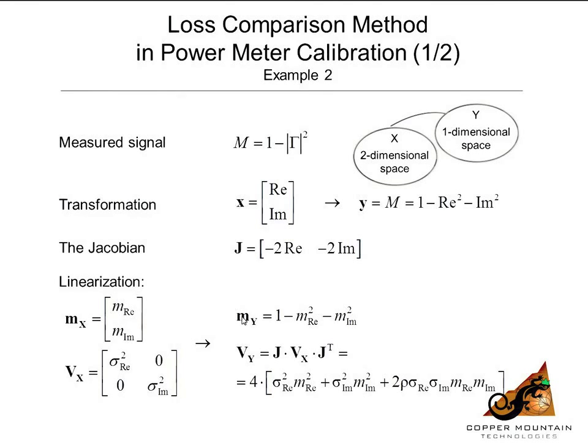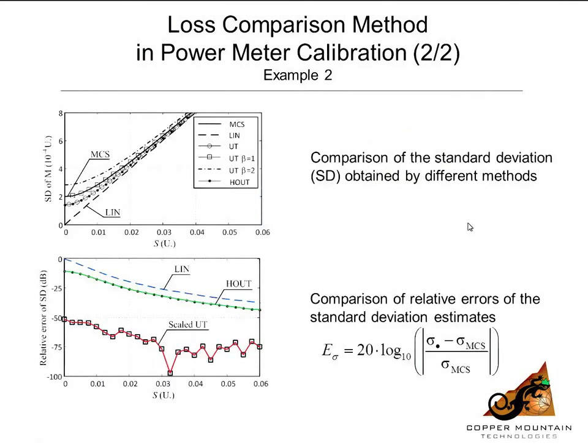And this is the framework for the linearization method. This is not new. This is well known. So, we applied the unscented transform and the higher-order unscented transform to this problem. And you can see the estimates that were obtained. Again, at lower values of x here, the linearization model tells us the uncertainty will approach zero, which is not an intuitive result. And in fact, as shown by the Monte Carlo simulation, not to be correct. But in this case, the unscented transform predicts the uncertainty quite accurately when we use beta equal to 1. So, this is a so-called scaled unscented transform, and the parameter beta can be chosen according to the particular problem that you're analyzing. In this case, beta equals 1 seems to give us the best result.